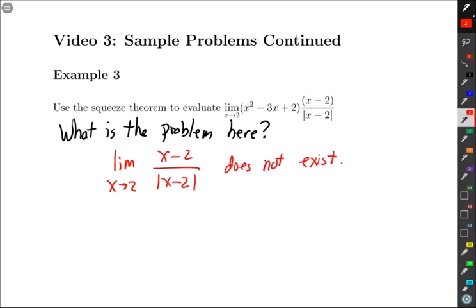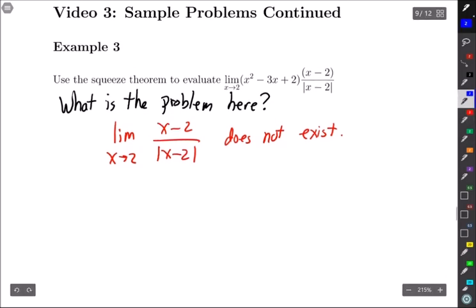But what do we know about that function? Well just like from before that ratio there is either minus 1 or 1. If x is bigger than 2 that is just 1 because it ends up being x minus 2 over x minus 2, it's 1. If x is less than 2 I get minus 1 which means that like we had for the sine function I can write something like this.